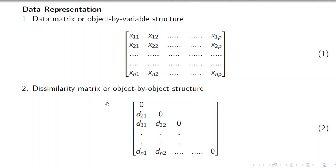In the dissimilarity matrix, we represent the dissimilarity or distance between objects. This is an n-by-n matrix where d21 represents the difference between object 2 and object 1, d31 is the difference between object 3 and object 1, and so on. The diagonal entries are 0 because the distance between an object and itself is 0. Entries below the diagonal represent the dissimilarity between points, and this is another representation used for clustering.